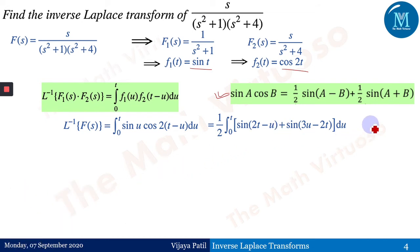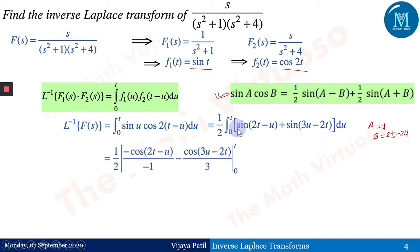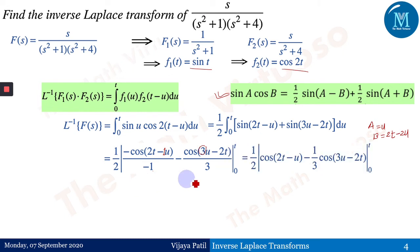With A = u and B = 2t−2u, the formula gives ½sin(u−(2t−2u)) + ½sin(u+(2t−2u)) = ½sin(3u−2t) + ½sin(2t−u). Integrating: sin gives −cos, so −cos(2t−u) divided by −1 (coefficient of u), and −cos(3u−2t) divided by 3. Limits run from 0 to t.